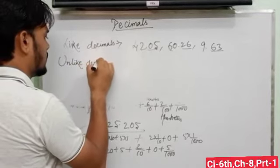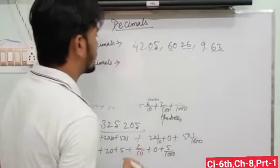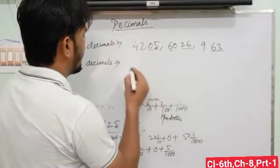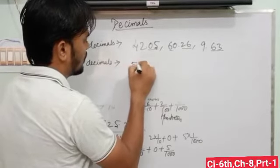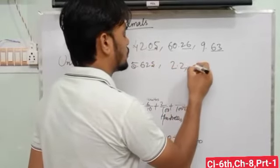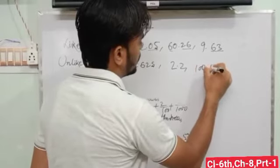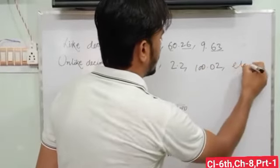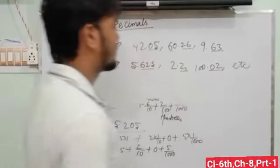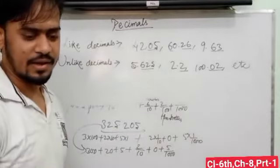Unlike decimals: those decimal numbers which have different numbers of digits after the decimal. Like decimals 5.625, 2.2, 100.02, etc. All have different numbers of digits after the decimal, so these are called unlike decimals.